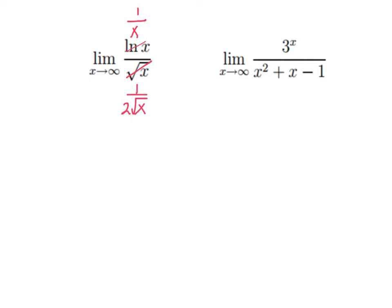Now, this doesn't help us a heck of a lot in this form, but we can do a little bit of algebra. So, let me rewrite this. Got x going to infinity, 1 over x. Now, instead of dividing by 1 over 2 square roots of x, let me multiply by the reciprocal. So, this becomes the limit as x approaches infinity of 2 over the square root of x, which is 0.